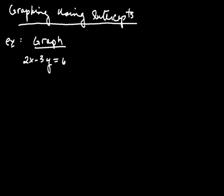In this video, we're going to graph a line using intercepts. We've got a line here: 2x minus 3y equals 6. Let's go ahead and graph it by plotting the intercepts.